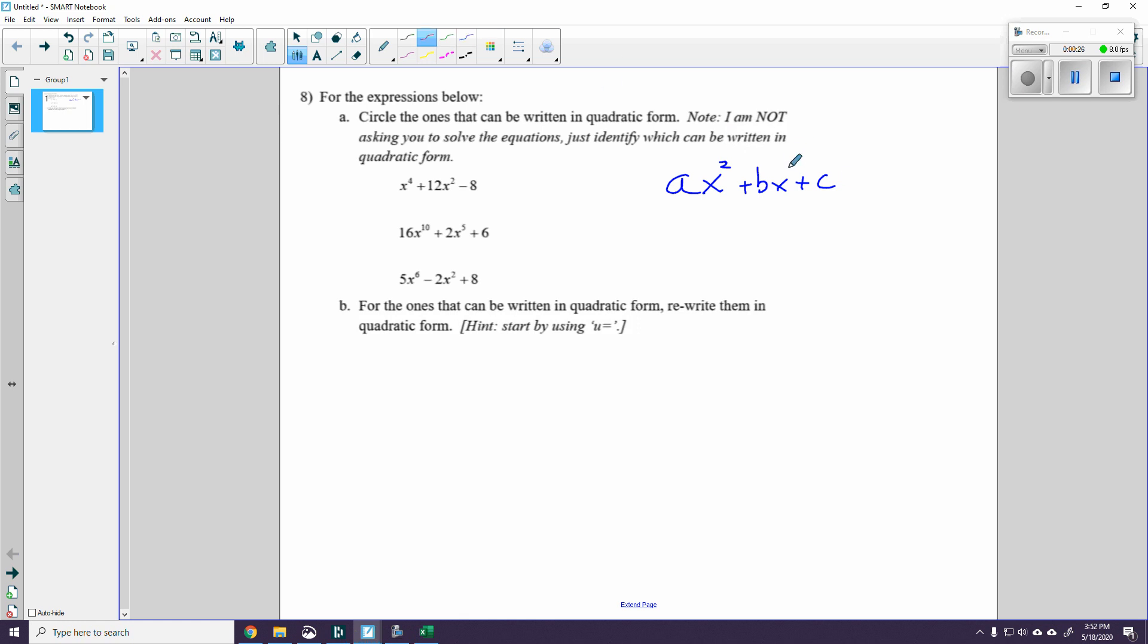You'll notice there's an implied one here, and here there's really an x to the zeroth power, because anything to the zeroth power is one. We don't usually write that x to the zeroth, and we don't put the one here either. That's implied.